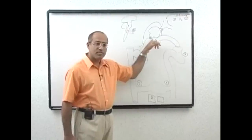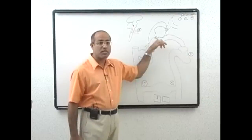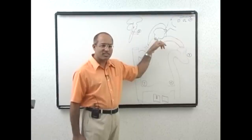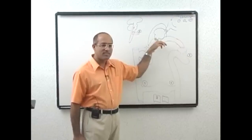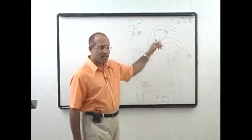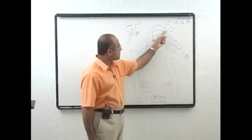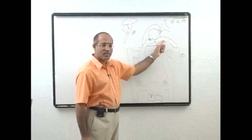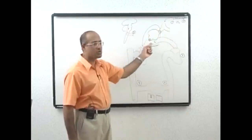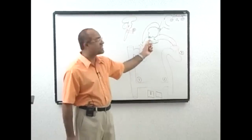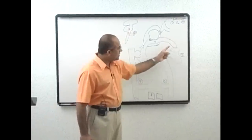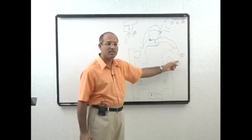Cause number four: problem with the gas exchange area. It may be too thick and fibrotic, or it may be destroyed — as in emphysema, where there is excessive destruction of interalveolar septa. Cause number five: if hemoglobin level is so low that in spite of normal oxygen supply to the blood, the blood cannot carry enough oxygen — this produces anemic hypoxia.